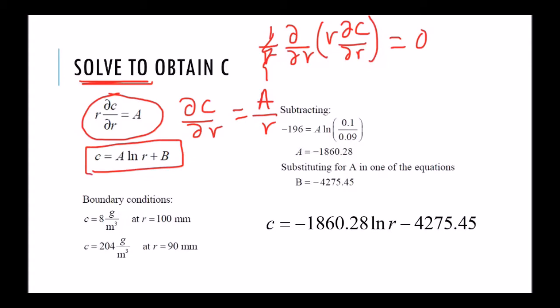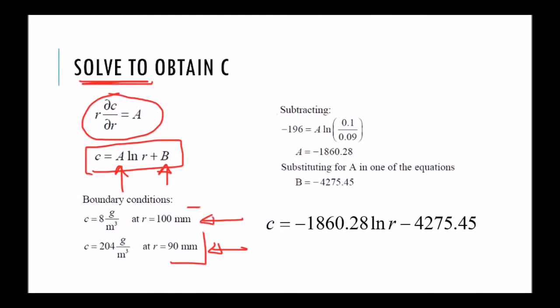Integrating, we get C equals A natural log of R plus B, and so we have these two unknowns, constants of integration that we need to evaluate based on the two boundary conditions we have. We simply have to plug in these two boundary conditions. But be careful, this is in millimeters and then the concentration is 8 grams per meter cube, so the millimeters have to be converted to meters. So let's plug in the first one. We get 8 equal to A natural log of 0.1 plus B.